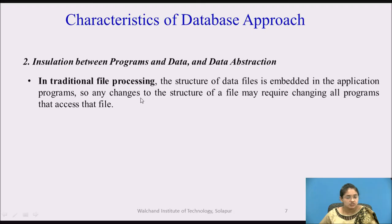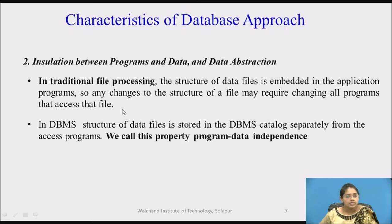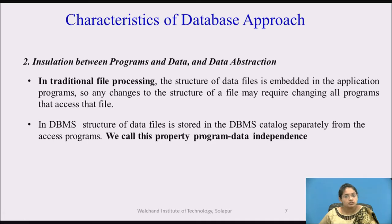Any changes to the structure of a file may require changing all the programs that access that file. In a database management system, the structure of the file is stored in the DBMS catalog separately from the programs that access it. We call this property program-data independence. In C programming, if you want to change any data or the structure of a file, you need to change all the programs that access that file. But in DBMS this is not the case — the data is stored in the database catalog, and you need not change the programs. You only make changes in the database catalog and the changes will be reflected in the database.